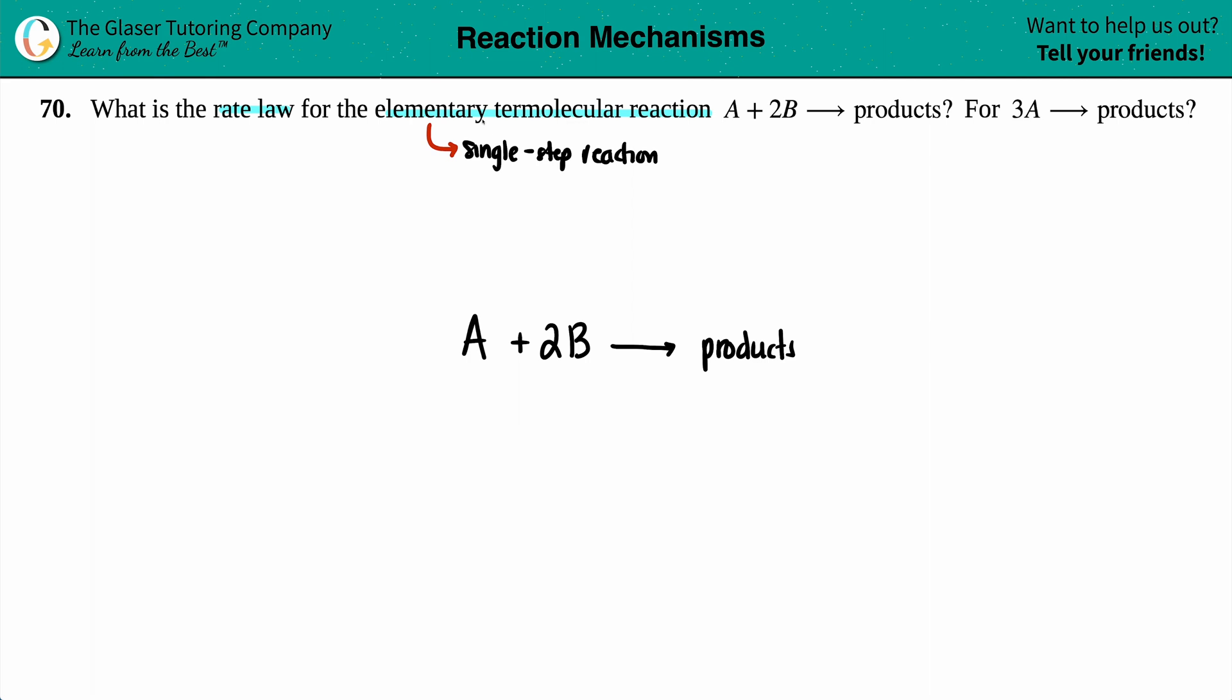Termolecular, ter comes from tertiary, which means the number 3, and molecule. If you have a termolecular reaction, that just means that you have three molecules in the reactants. So this is just kind of giving more context to your elementary step here, where you have 1A plus 2Bs, you have a total of three reactants. So it's termolecular.